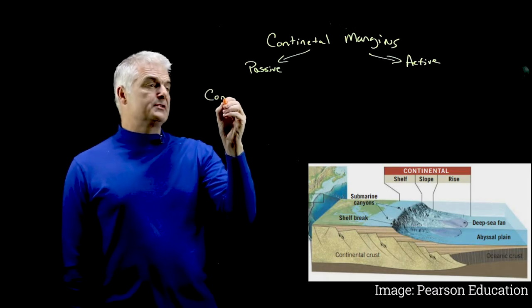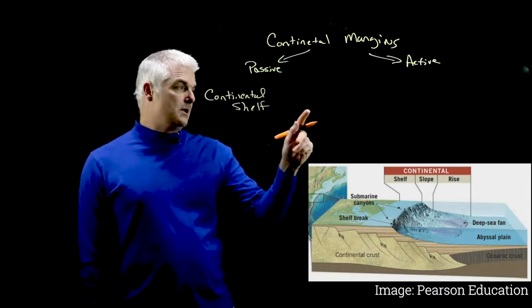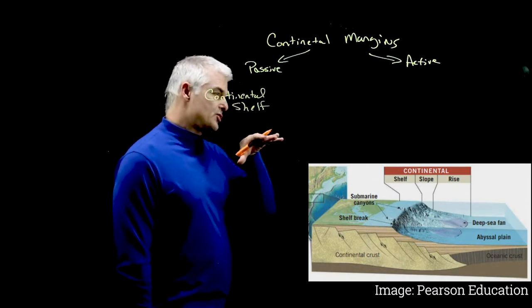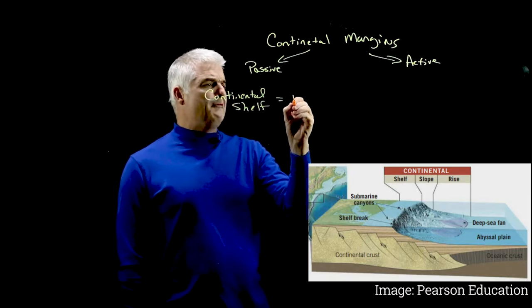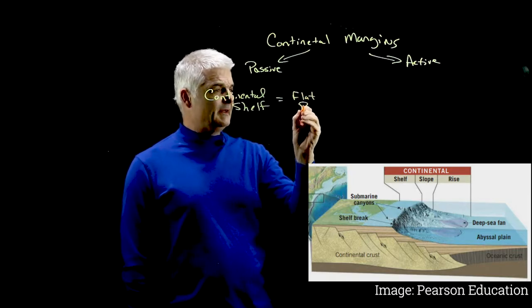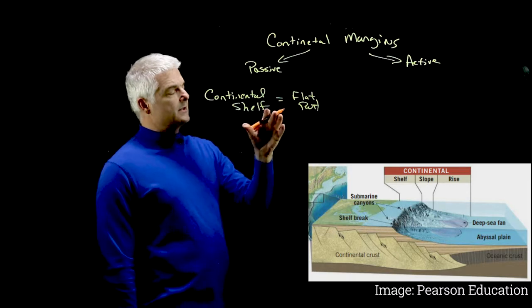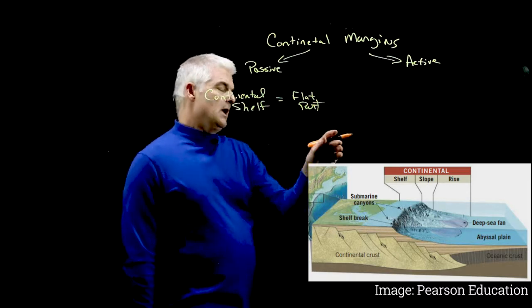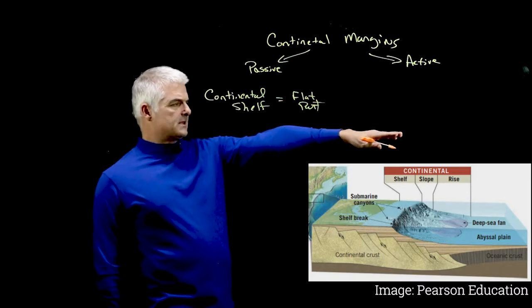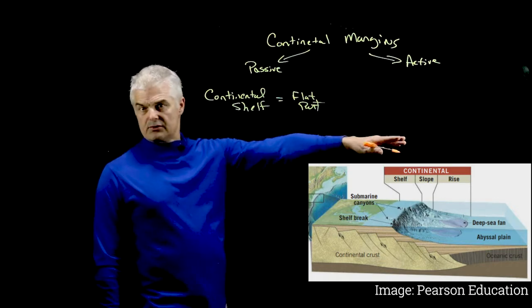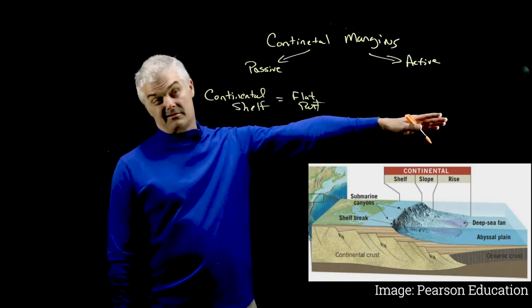The first one is the continental shelf. So you can see that right here. So the continental shelf is what you'd say. That would be the flat part. So at the edge of most continents, you'll see a flat part. That's the continental shelf. Makes sense. Looks like a shelf.